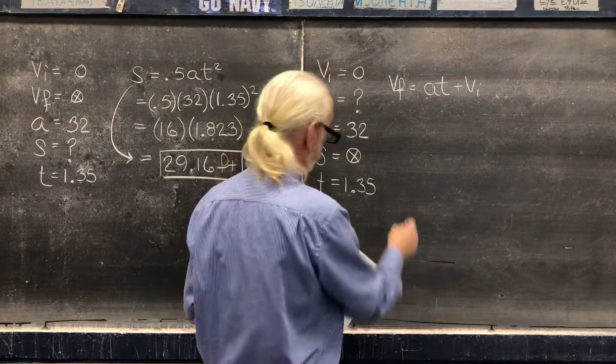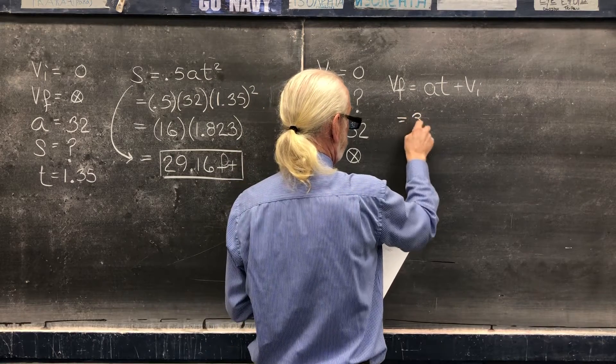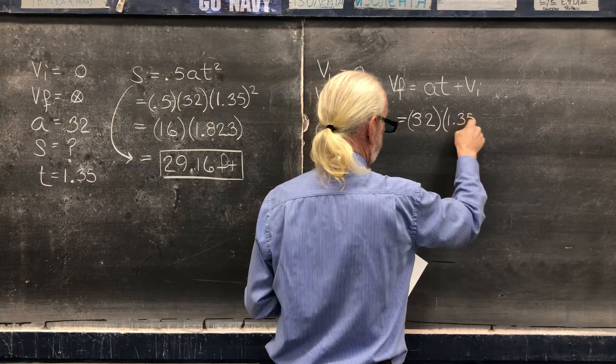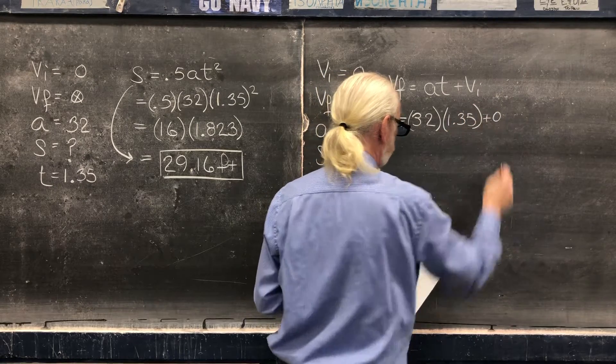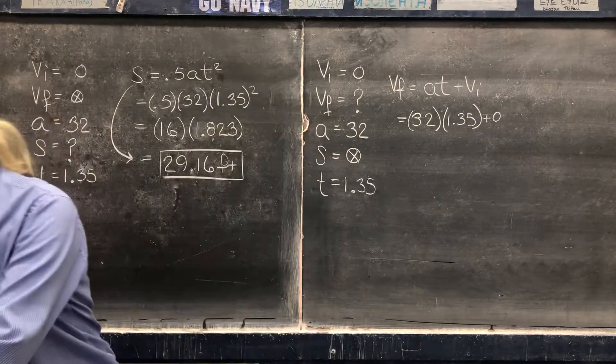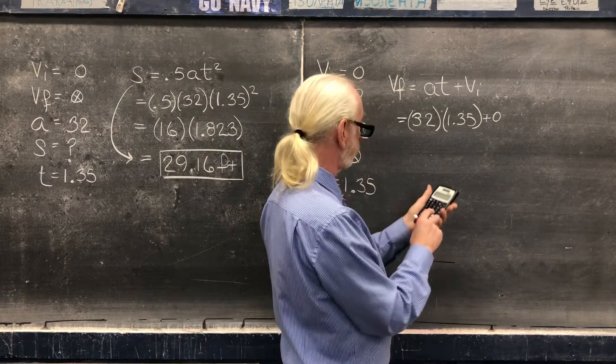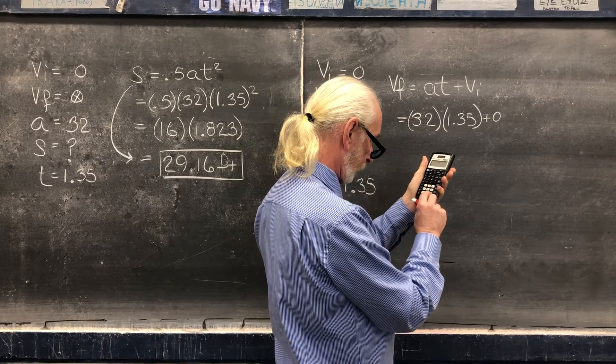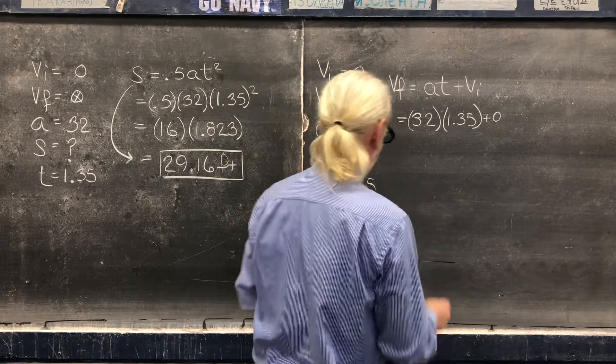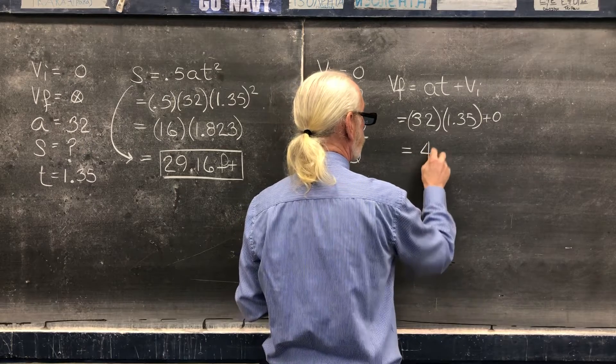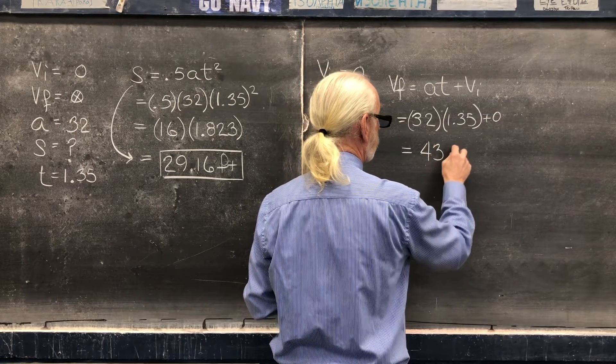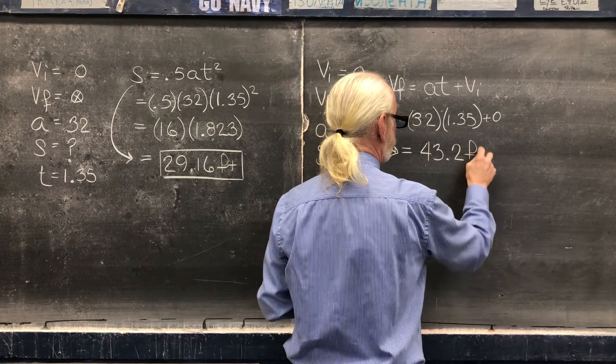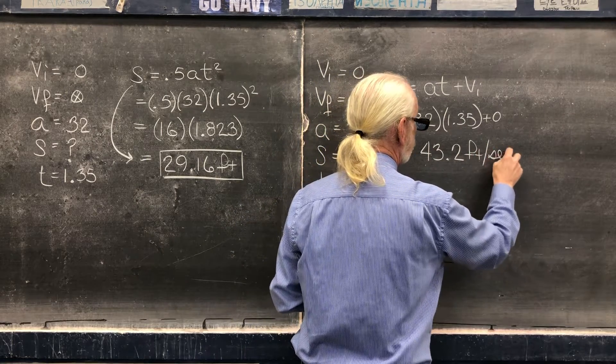Plug and chug: 32, 1.35, plus zero. I got 43.2. Keeping our eye on the ball, that's velocity, so that's feet per second.